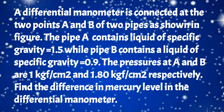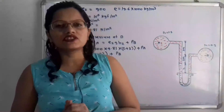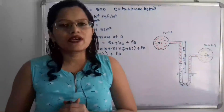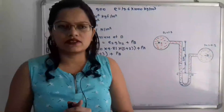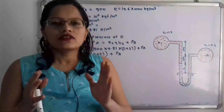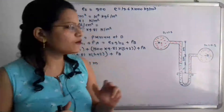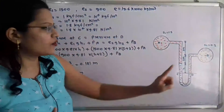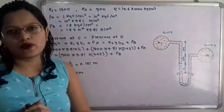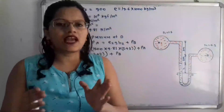Now let us first understand the given data and the structure of this differential manometer. This manometer is called a differential manometer because the two pipes are at different levels. Here is pipe A and here is pipe B, and the levels are different. We will use suffix 1 for the fluid in pipe A and suffix 2 for the fluid in pipe B. So specific gravity S1 is equal to 1.5.